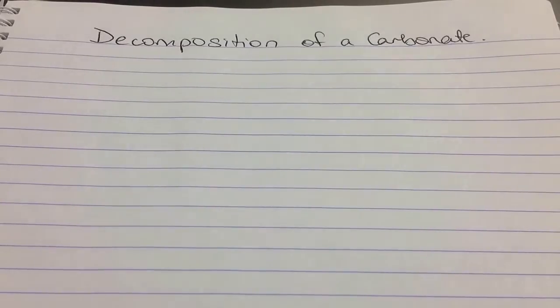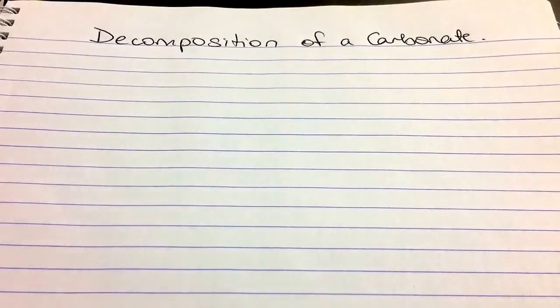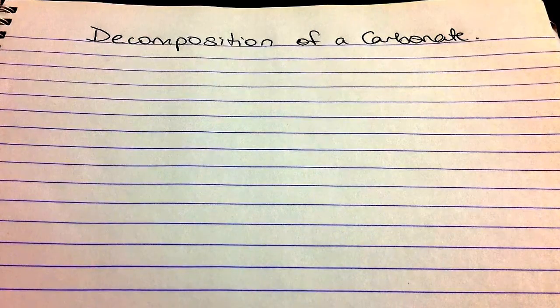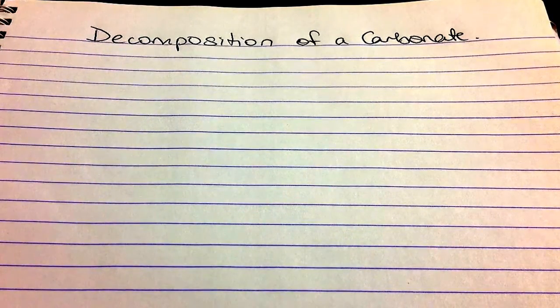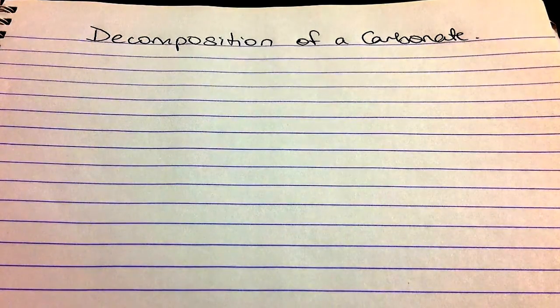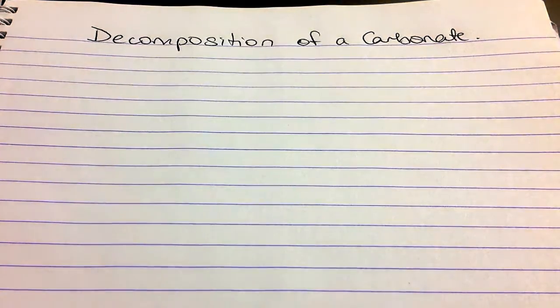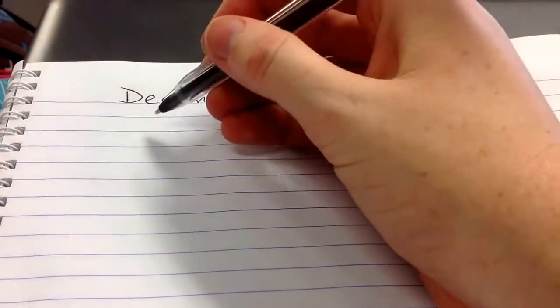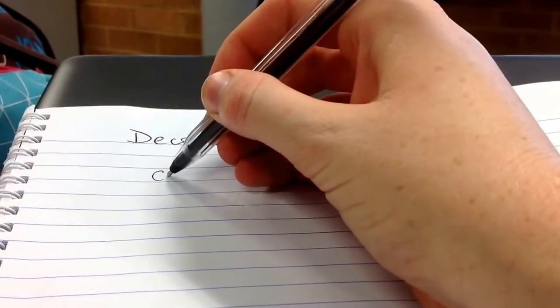So we've just seen how to decompose a carbonate. And the chemical changes that we saw were a green powder turning into a black powder. And then we did some other fancy chemistry with that too. So to start off with, with the decomposition of a carbonate that we did, we had copper carbonate.